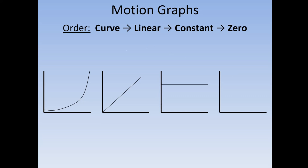So the graph order is curved, linear, constant, zero — write it out as CLCZ or draw the graphs. Whatever they tell you, you figure out which graph type applies. For example, if they say the velocity graph is constant, put velocity over the constant slot. The order of motions is DVA, so to the left of V is displacement, and to the right is acceleration. If velocity is constant, displacement is linear and acceleration is zero.